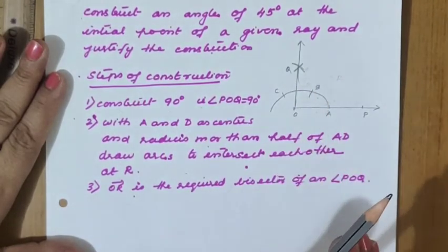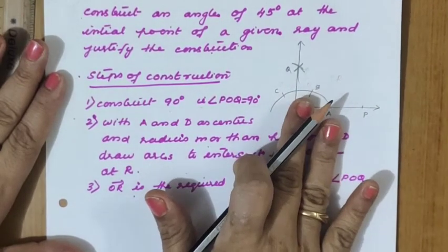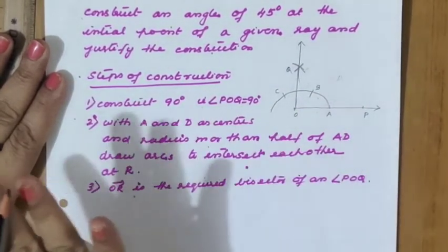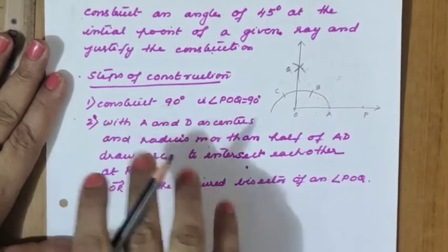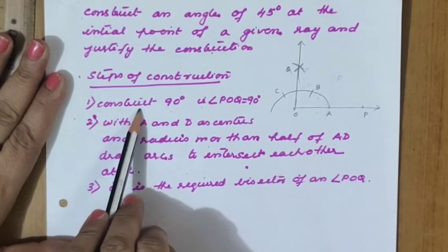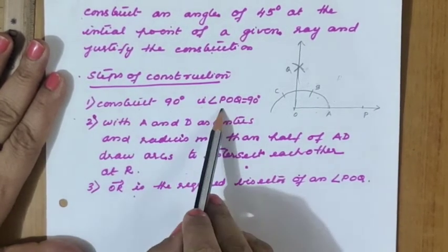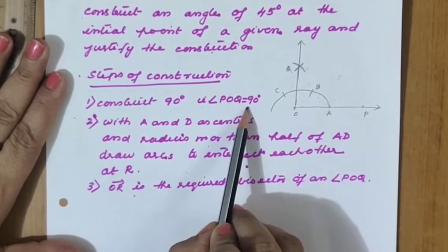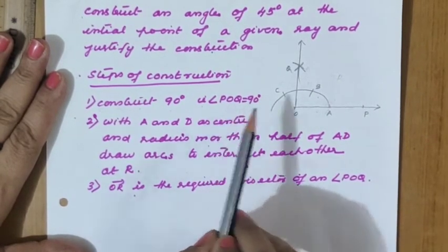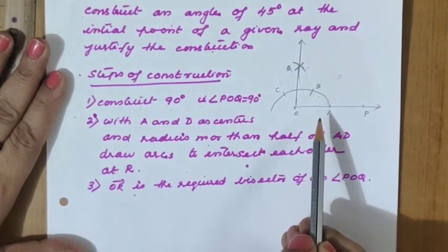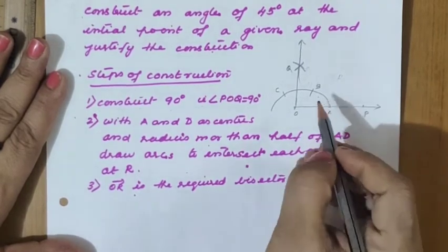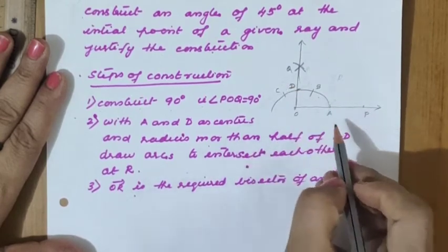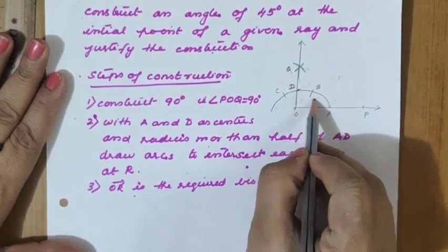So these steps are used when constructing 90 degrees directly. Otherwise, we simply write the first step as: construct 90 degrees, that is angle POQ equals 90 degrees. From this 90 degree base we are going to make 45 degrees. We mark this intersection point as D.